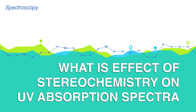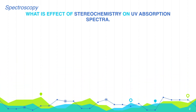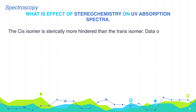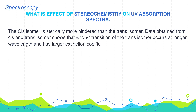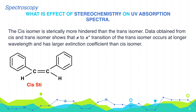What is the effect of stereochemistry on UV absorption spectra? The cis isomer is sterically more hindered than the trans isomer. Data obtained from cis and trans isomers show that the pi to pi* transition of the trans isomer occurs at a longer wavelength and has a larger extinction coefficient than the cis isomer.